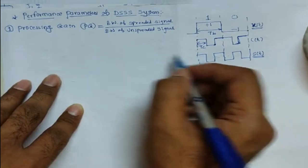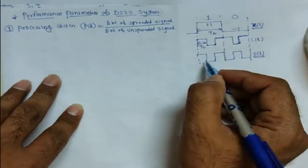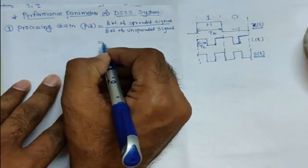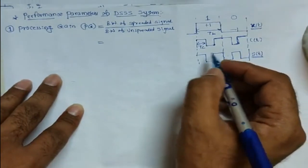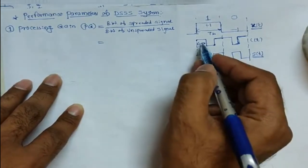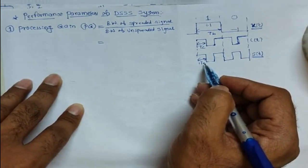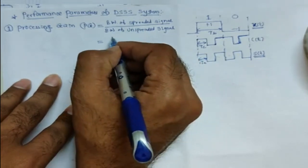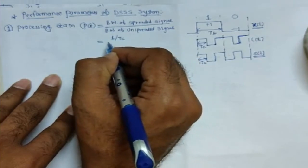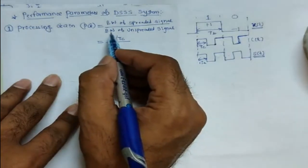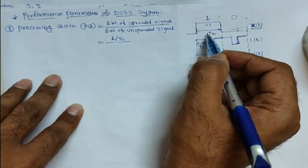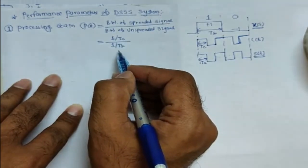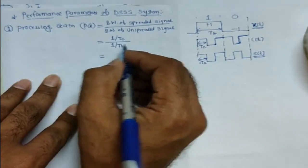To find the processing gain, we look at the bandwidth of the spreaded signal and the bandwidth of the unspreaded signal. The spreaded signal has time period Tc per pulse, so its bandwidth is 1/Tc. The unspreaded signal has time period Tb per bit, so its bandwidth is 1/Tb. The processing gain is therefore the ratio: bandwidth of spreaded signal divided by bandwidth of unspreaded signal, which equals Tb/Tc.